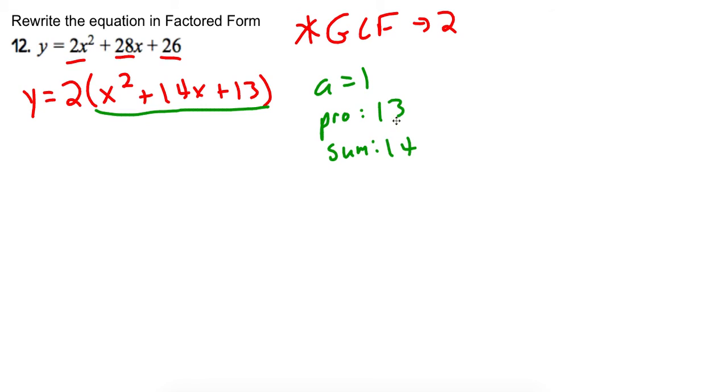And since the a value is 1, I'm not going to have to factor this thing by grouping, but I can go straight to my two sets of binomials. So those two numbers are looking like they're going to be 1 and 13.